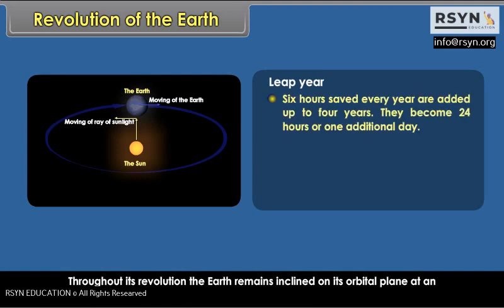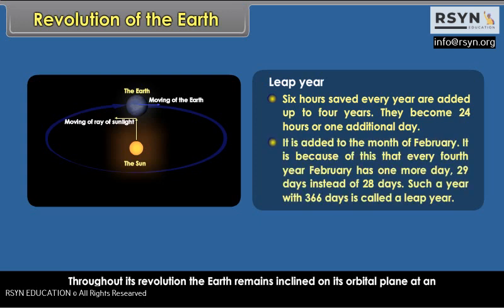Leap Year. Six hours saved every year are added up over four years. They become 24 hours, or one additional day. It is added to the month of February. It is because of this that every fourth year, February has one more day — 29 days instead of 28 days. Such a year with 366 days is called a leap year.